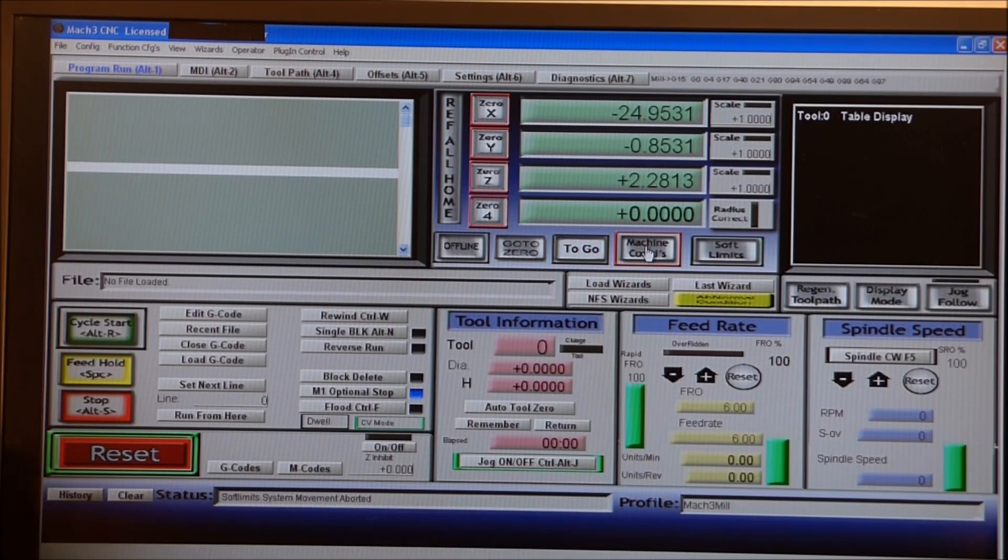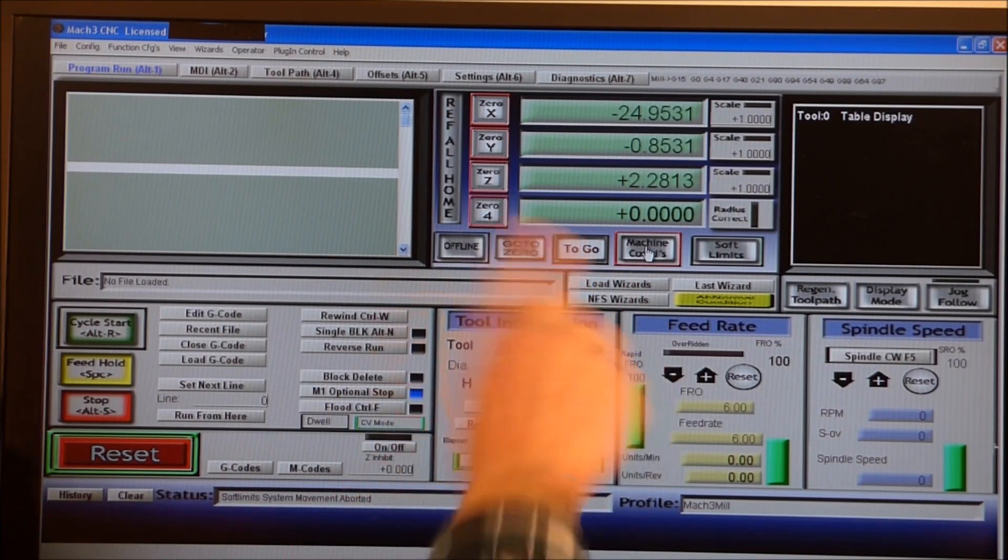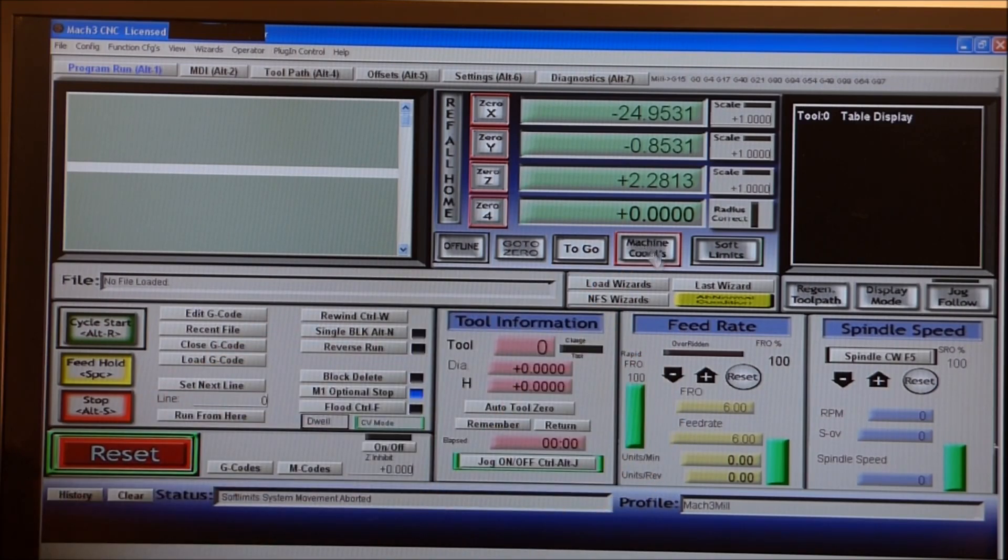Now the machine is not working, the card is not working, but Mach 3 still thinks it's connected to it. The easiest way to do this - you have machine coordinates turned on and you just jog Mach 3.